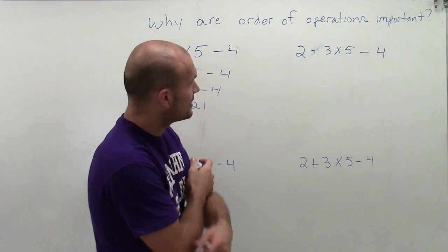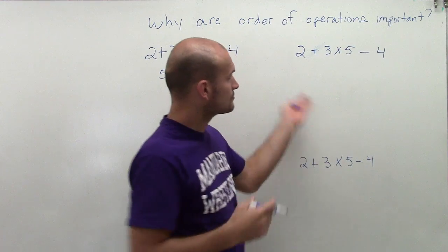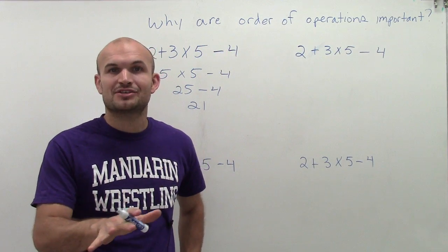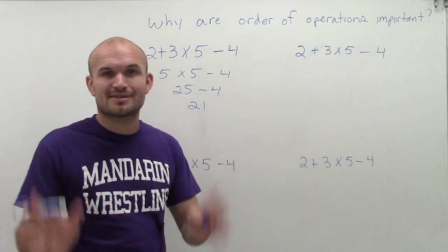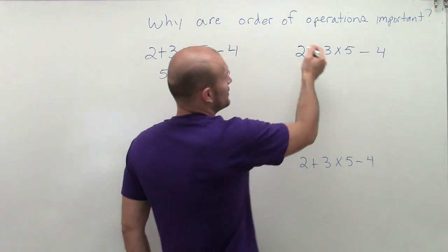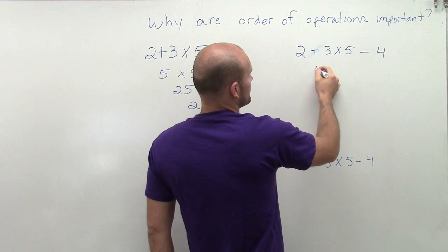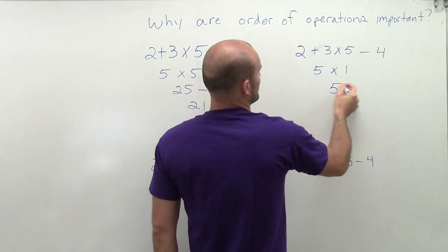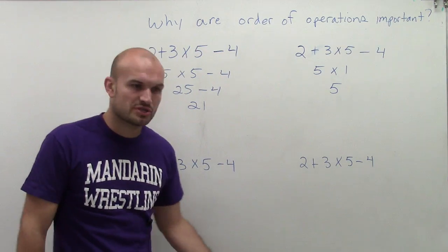Let's see, the next student - what the next student likes to do is they hate doing multiplication. They want to do addition and subtraction because that's what they first learned, so that's what they're gonna do. So they do 2 plus 3, which is 5, 5 minus 4 is 1, and they end up getting 5.